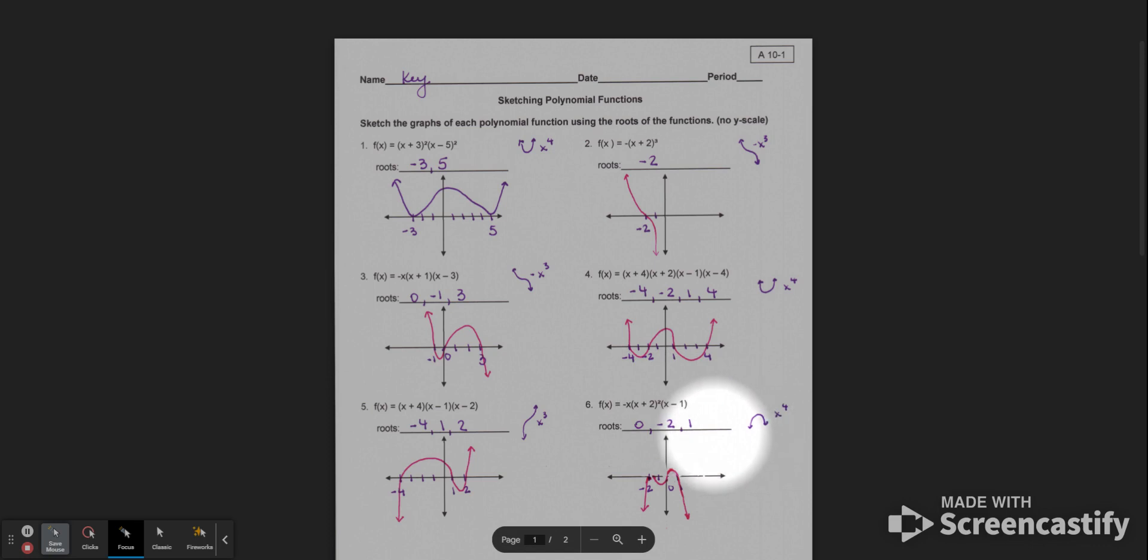How do I graph this? Well, it's opening downward, because it's negative, and it's to the fourth power. So it goes up, down, up, and then down again.